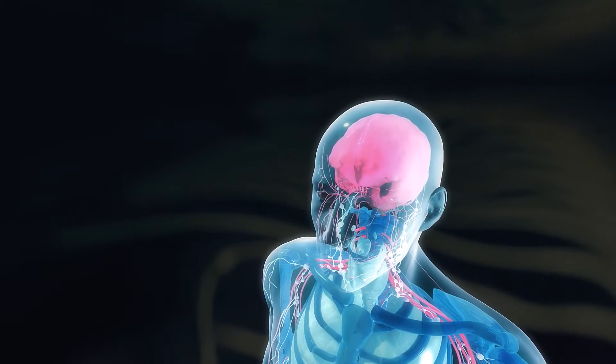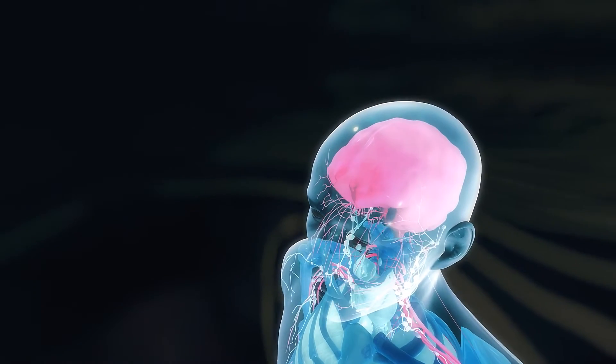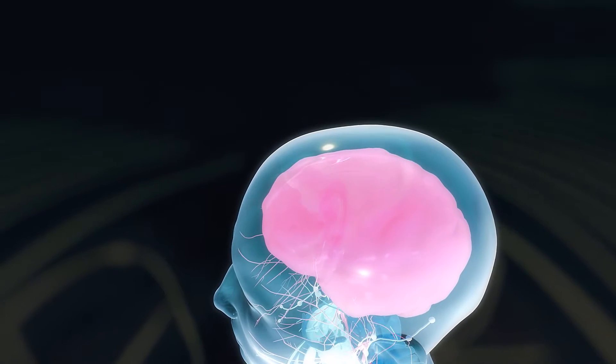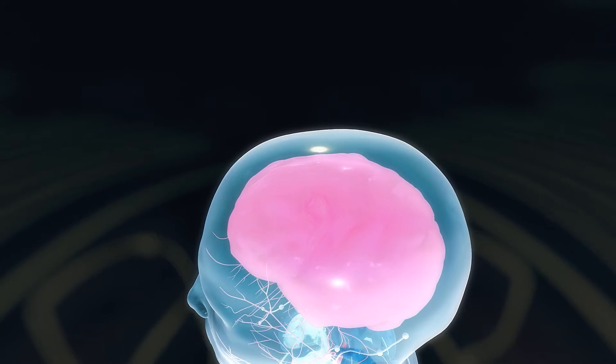When MS is active, white blood cells, lymphocytes like T and B cells, invade the brain and spinal cord, triggering an inflammatory attack.